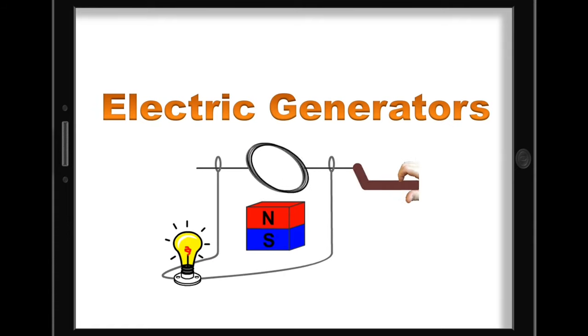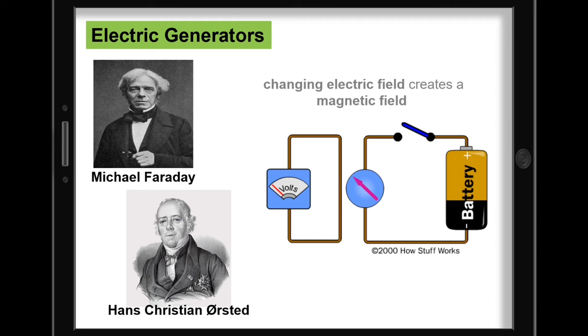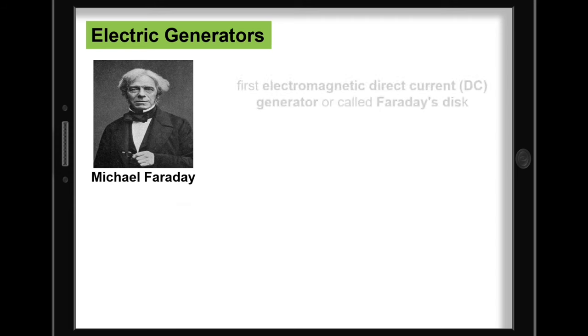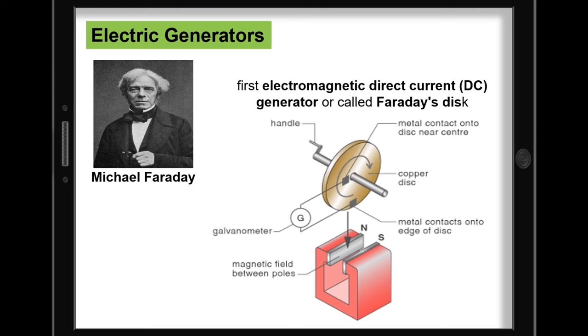Electric generators. As one of the most influential scientists of the 19th century, Michael Faraday took inspiration from the work of Danish physicist Hans Christian Orsted, who realized in 1820 that an electric current could be changed into a magnetic force. This discovery led to Faraday's law and the first electromagnetic direct current generator called Faraday's disk, which is a type of homopolar balanced polarity generator.